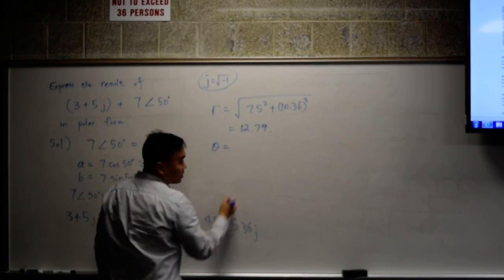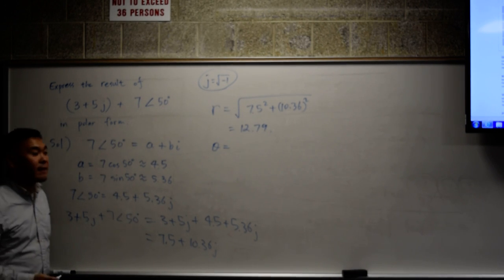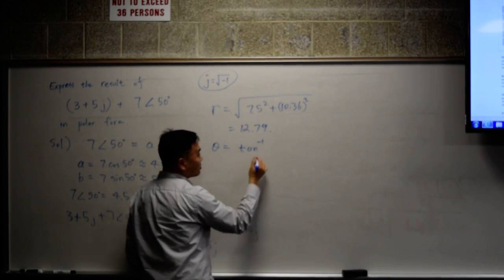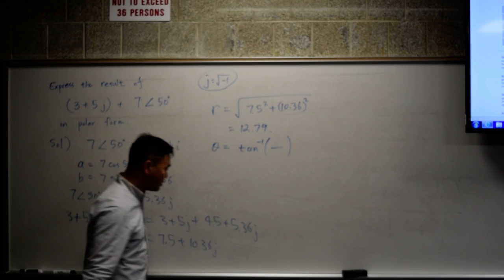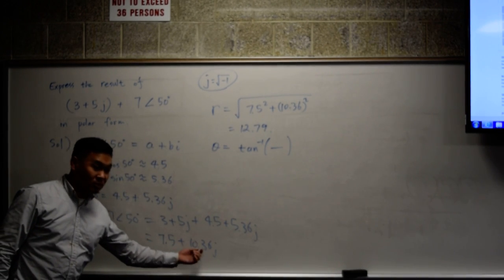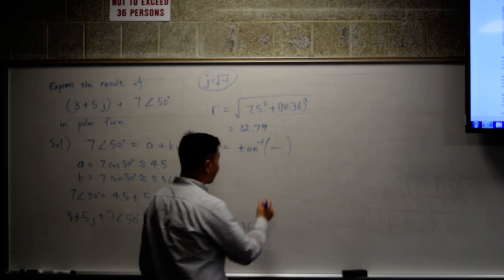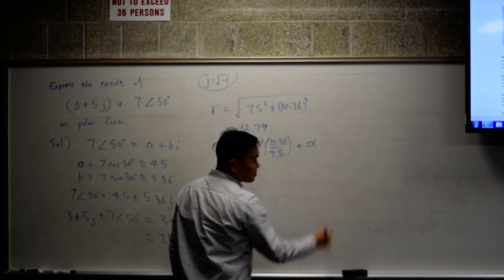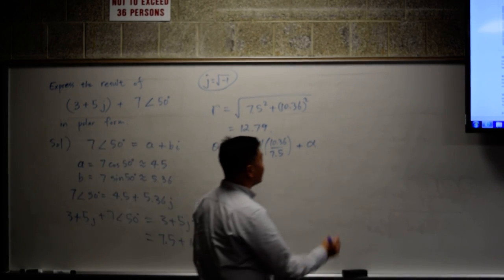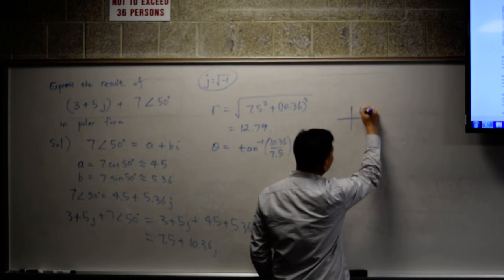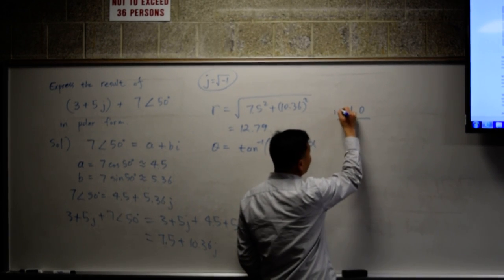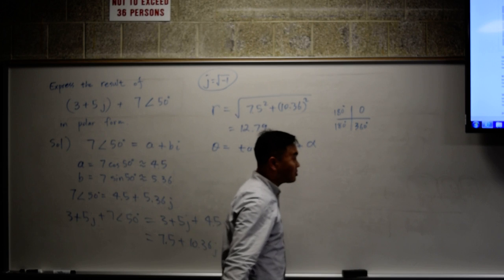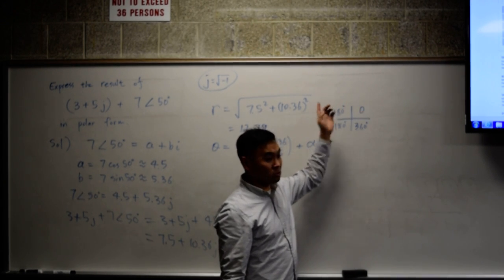How about the angle? How do you get the angle? Tan inverse, or arc tangent. And then what over what? B over A, right? The imaginary part over the real part. It's 10.36 over 7.5 plus alpha. What is this alpha? It's something that depends on the quadrant. In the first quadrant, you don't do anything. In the second one, you have to add 180. And in the fourth quadrant, you want to add 360 because you want the angles to be between 0 to 360 degrees.